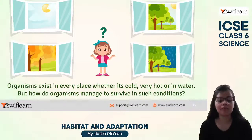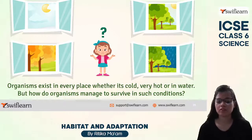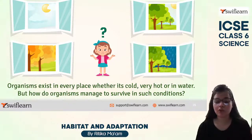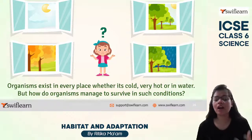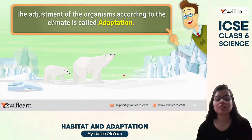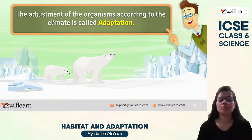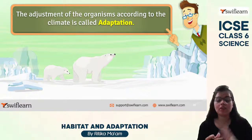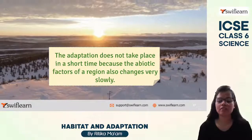Organisms on Earth live in every single place. Different organisms live in different conditions — very hot climates, very cold climates, or in water. How are they able to survive in such different conditions? For example, a polar bear lives in extremely cold conditions — how is it able to survive there? The answer is adaptation. Organisms adjust themselves according to their climate, and that process is known as adaptation.